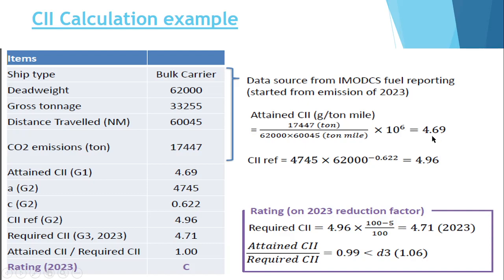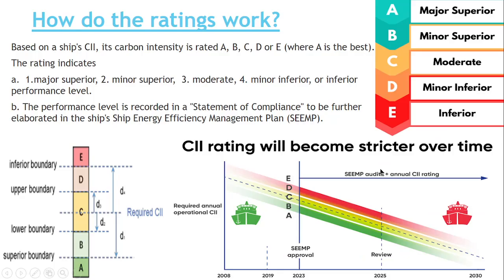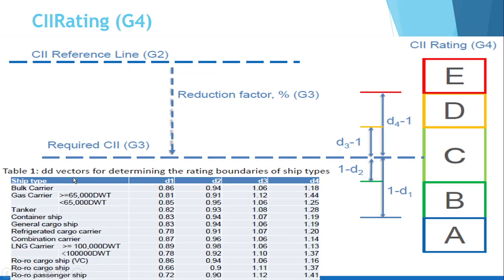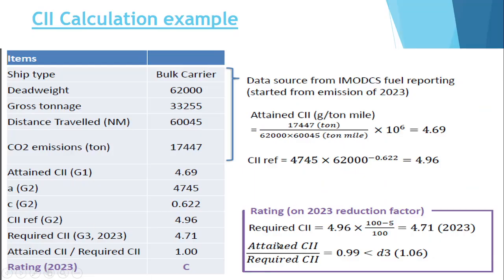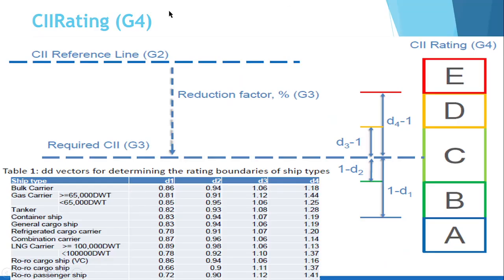Now you have to find the DD vector. The DD vector is basically attained CII divided by required CII. This division gives us the DD vector. So the attained is 4.69 and the required is 4.71. Therefore 4.69 divided by 4.71 gives us 0.99. The DD vector is 0.99.